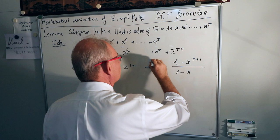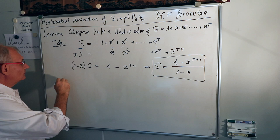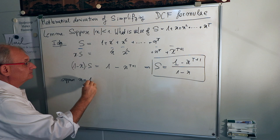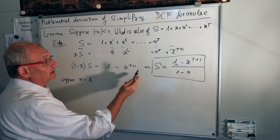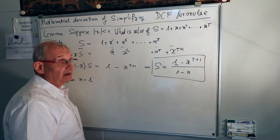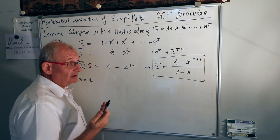Therefore S equals (1 minus x^(t+1)) divided by (1 minus x). Now we can discuss the particular cases. Suppose x equals 1 — in this case 1 minus x equals 0, and you have a division by zero, which gives infinity. So this formula does not work for x equal to 1.